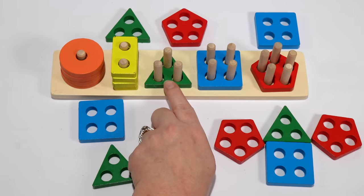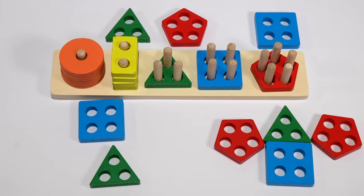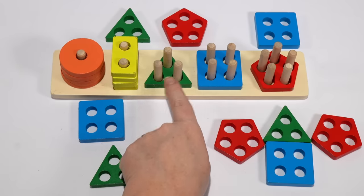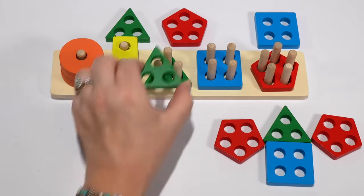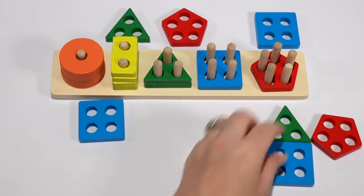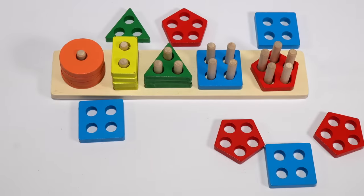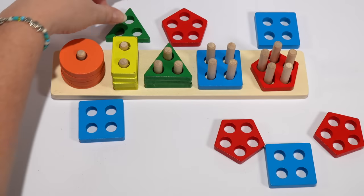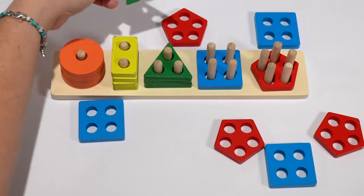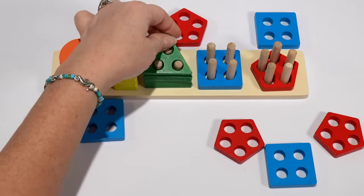Then we have a triangle. How many triangles do you think we have? Let's count to be sure. We have one, two, three. Do you see another triangle? Oh, there it is. It was hiding behind my rectangles. Four.